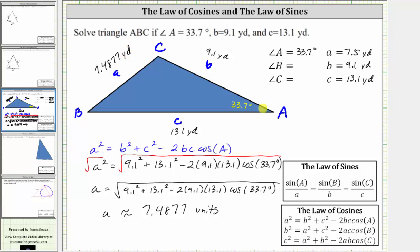Now that we have the measure of an angle and the length of its opposite side, we can use the law of sines to find angle B or angle C. Notice that angle C is opposite the longest side, and therefore angle C might be an obtuse angle. Finding an obtuse angle using the law of sines is more challenging, so it's best to leave the obtuse angle for last. Let's find the measure of angle B using the law of sines.